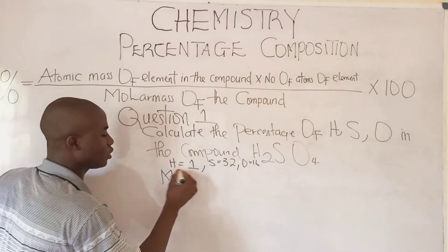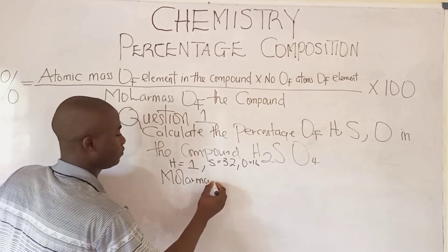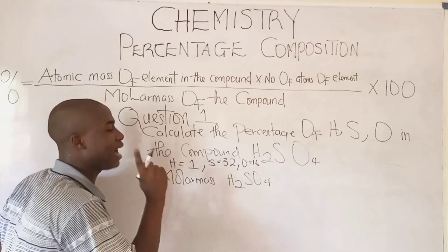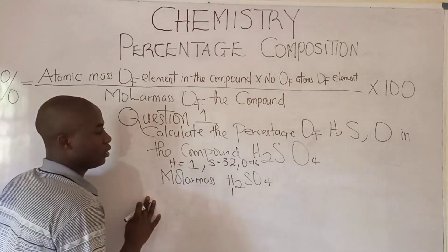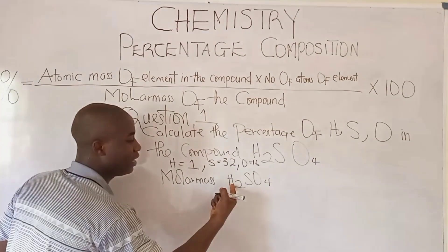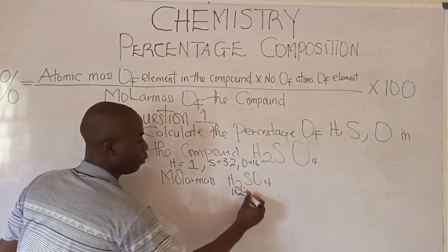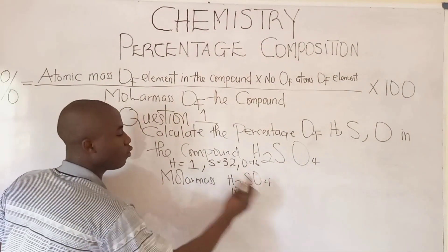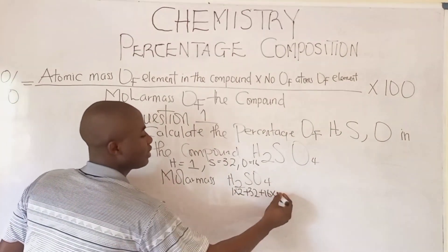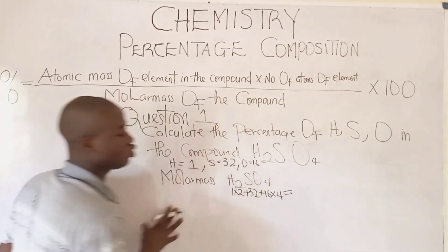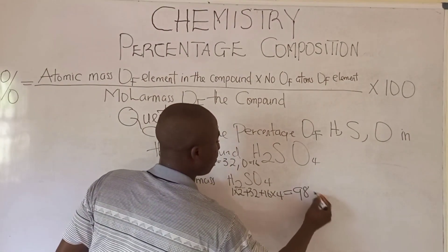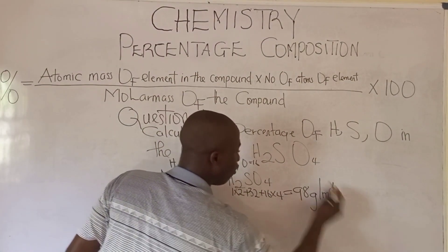Let's get the molar mass of H2SO4. The atomic mass of hydrogen is 1, and we have 2 atoms of hydrogen, so 1 times 2, plus atomic mass of sulfur which is 32, plus atomic mass of oxygen which is 16 times 4. Using our calculator, we get the molar mass of this compound to be 98 grams per mole.